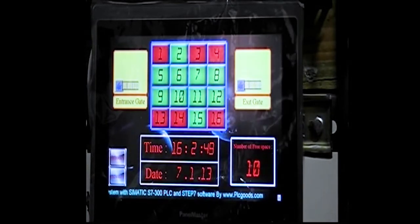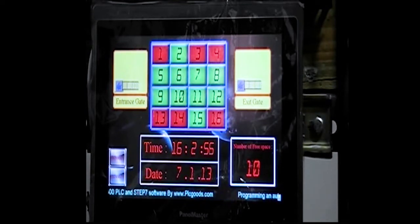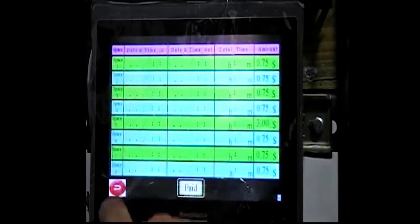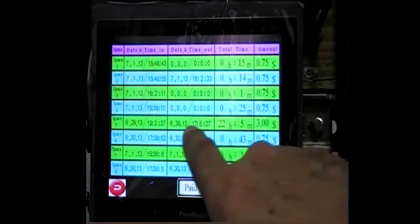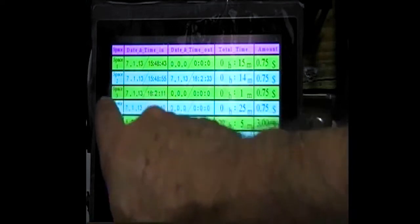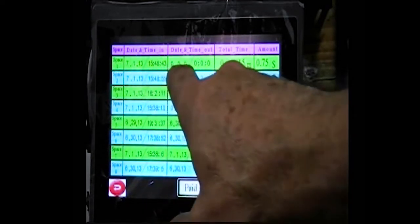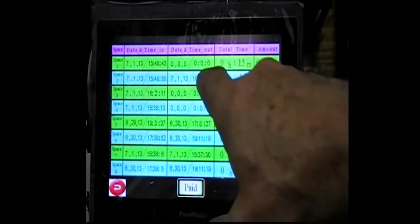If I want to know how much each car that is parked inside the parking lot owes to the owner, I come here and I can go to screen number one. This tabulated table shows that, for example, number one on this date and this time has come in and is still inside the parking.